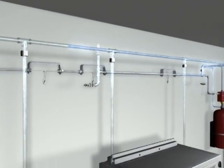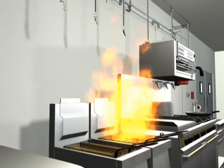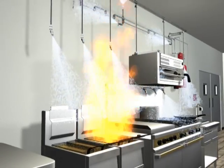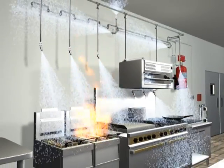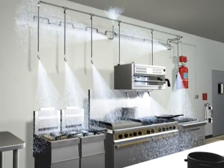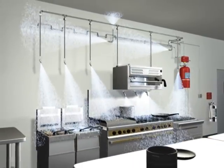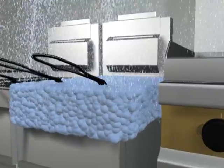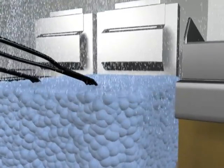The Pyrochem wet agent is then discharged onto the hazard from nozzles with specific spray patterns for maximum coverage. Once the wet agent is applied, it forms a vapor-securing blanket to prevent the possibility of fire reflash.